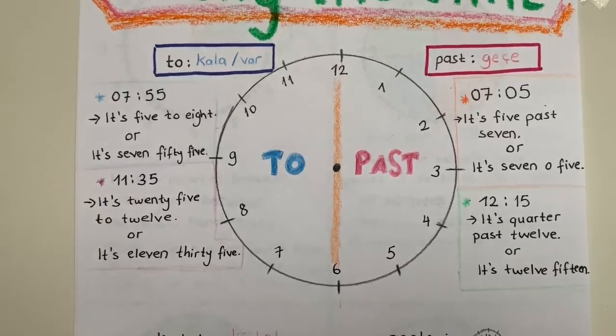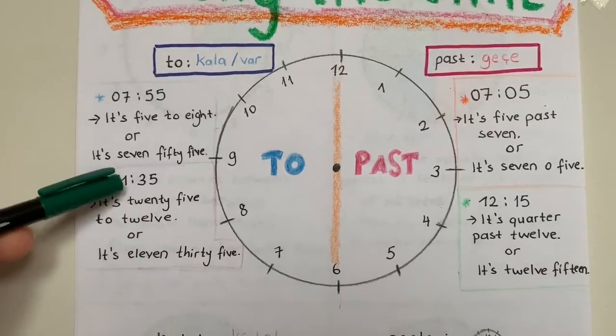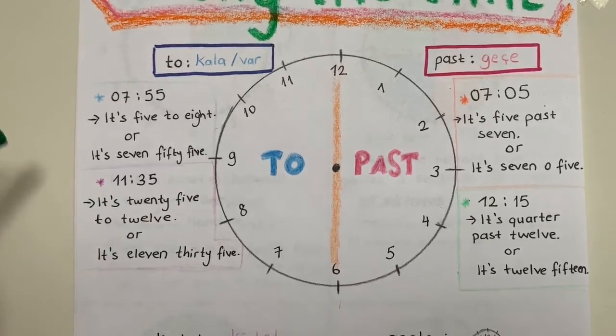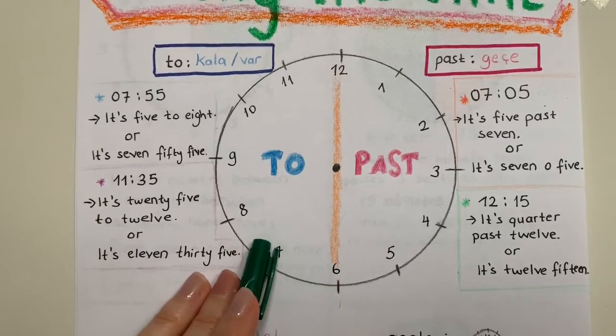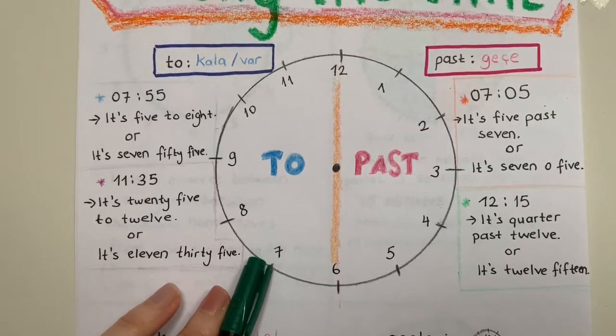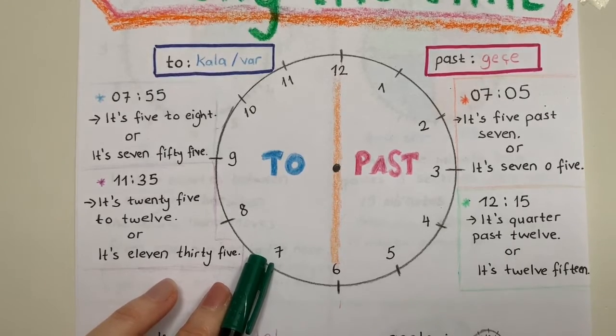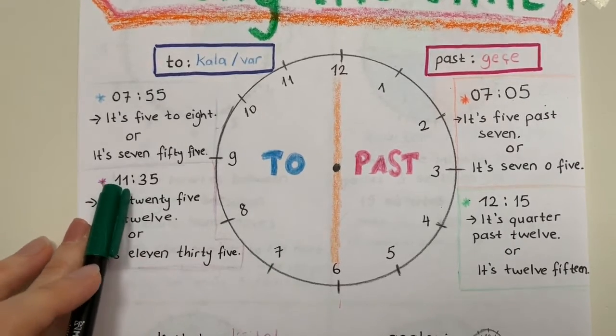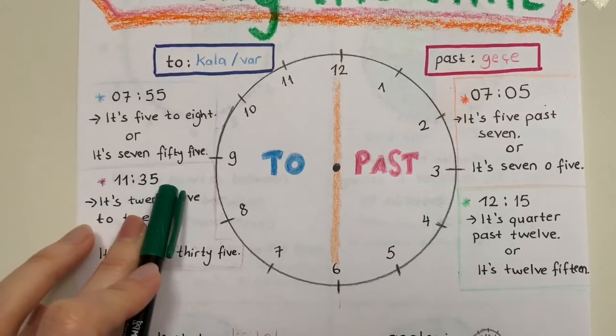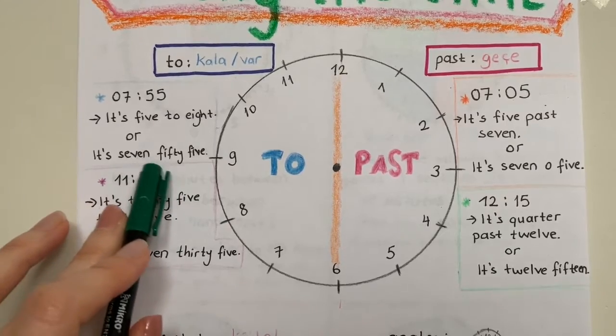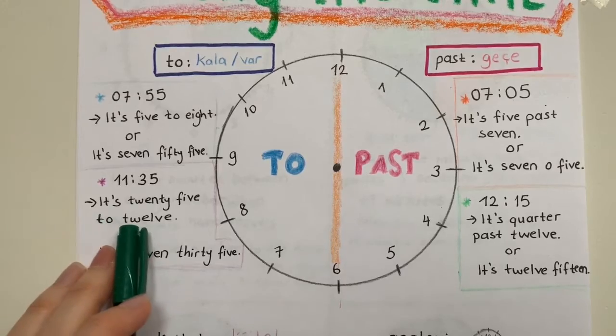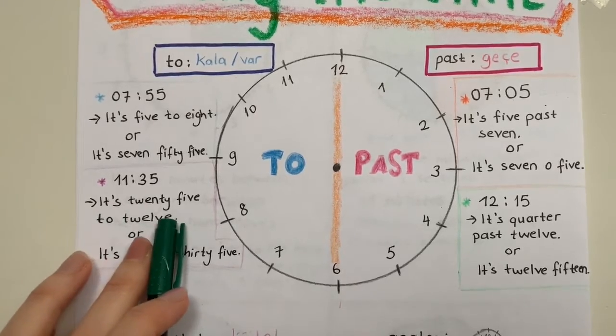Eleven thirty-five - I can say it is eleven thirty-five, or it is twenty-five to twelve. Bu sefer saatim yine buçuğu geçmiş. Yelkovanım otuz beşin üstünde olacak, yani yedinin üstünde olacak. Ve akrebim de artık on biri geçmiş, on ikiye yaklaşıyor olacak. O zaman on ikiye yaklaştığı için, kaç dakika var onu söyledim: twenty-five to twelve.